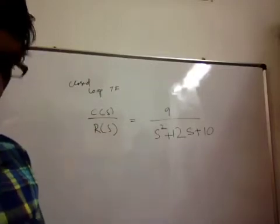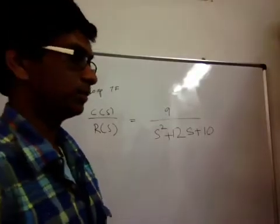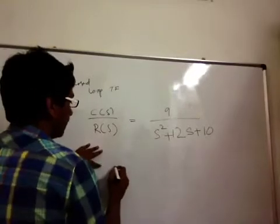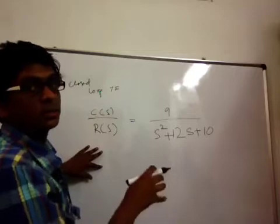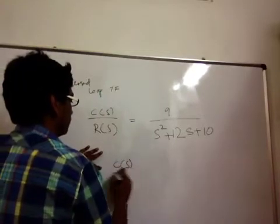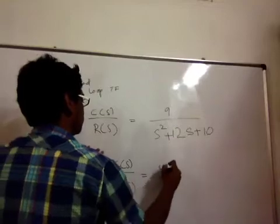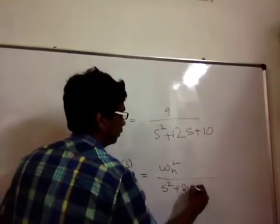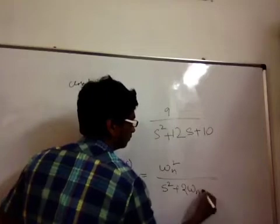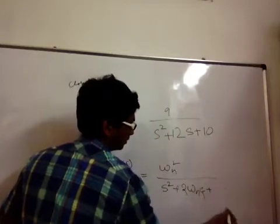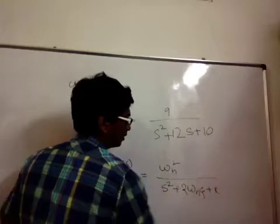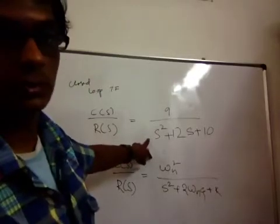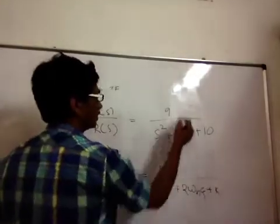Now, all you need to do if you want to find out different times is write this down in a specific form. Every second order transfer function can be written in the standard form: C(s)/R(s) = ωn² / (s² + 2ζωn·s + ωn²). Now if you look at the above transfer function, you can easily say that ωn² = 9.